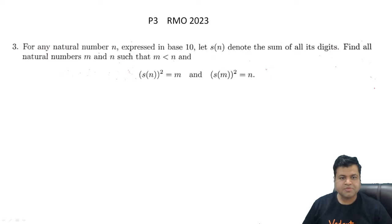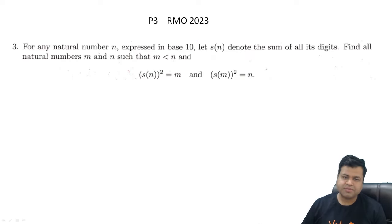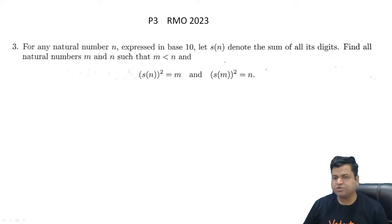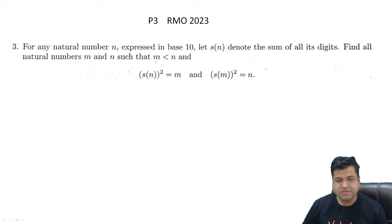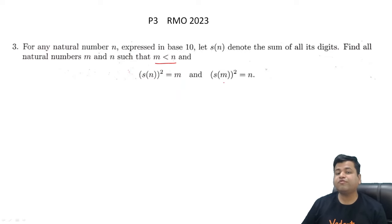Let's discuss Problem 3 of RMO 2023. For any natural number N expressed in base 10, let S(N) denote the sum of all its digits. Find natural numbers M and N such that M < N, the sum of digits of M squared equals M, and the sum of digits of N squared equals N.